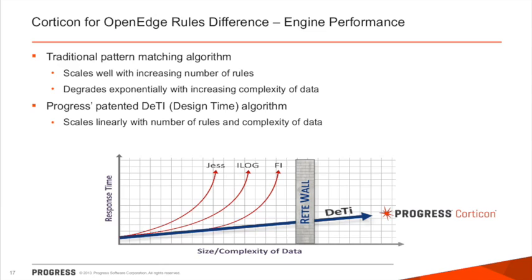I was just on a call in the last two weeks where one of our partners was being asked to show how they came up with a decision to ensure that they kept the law. They were able to go into their Corticon and say, 'this is how our decision tables are made,' and the response was simply 'good, we're good to go.' So it makes it a lot easier.